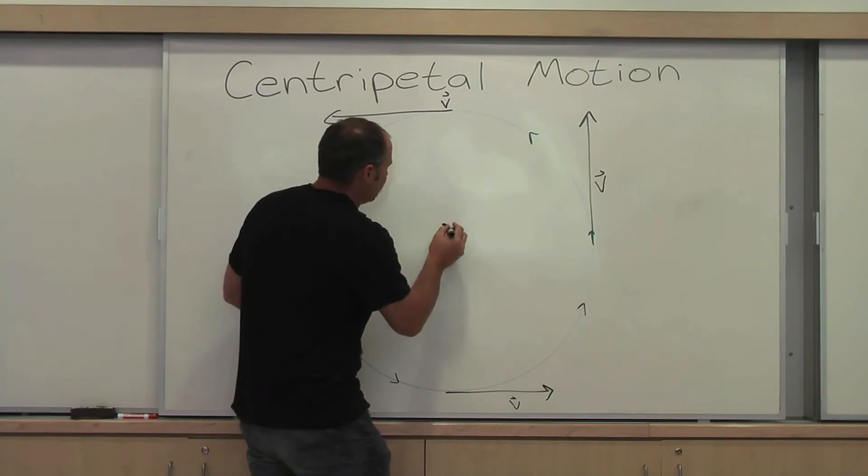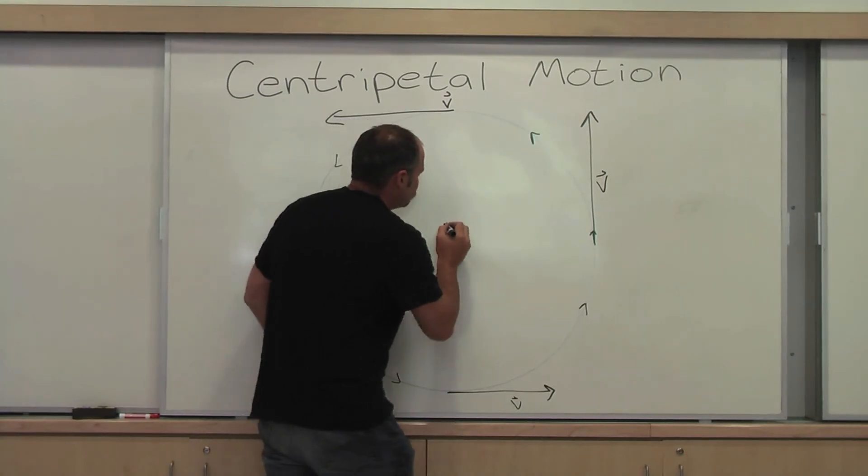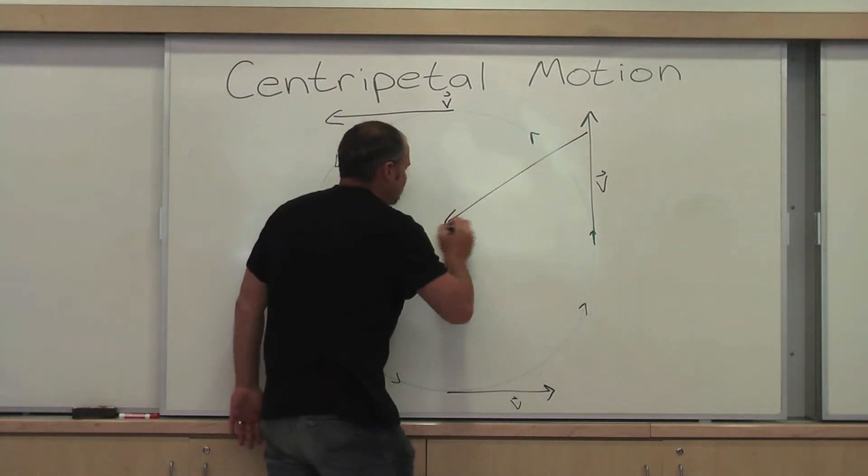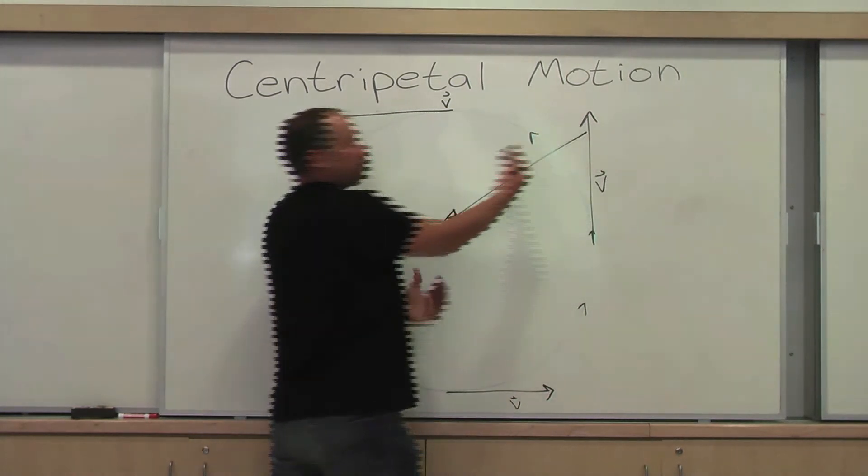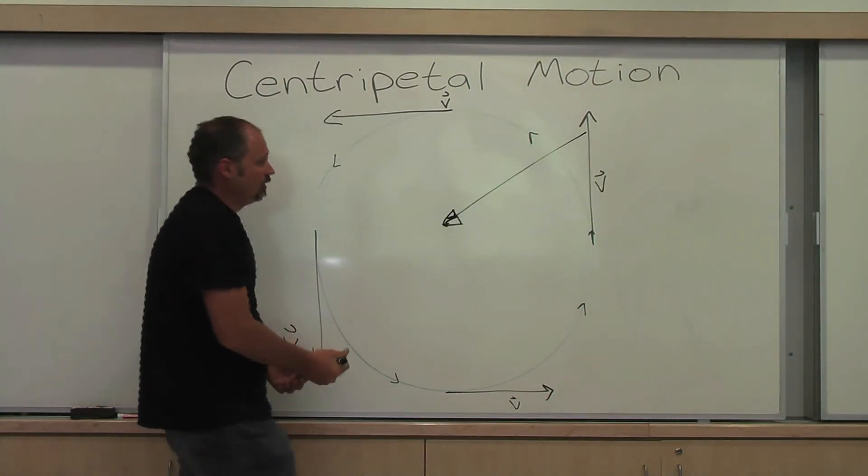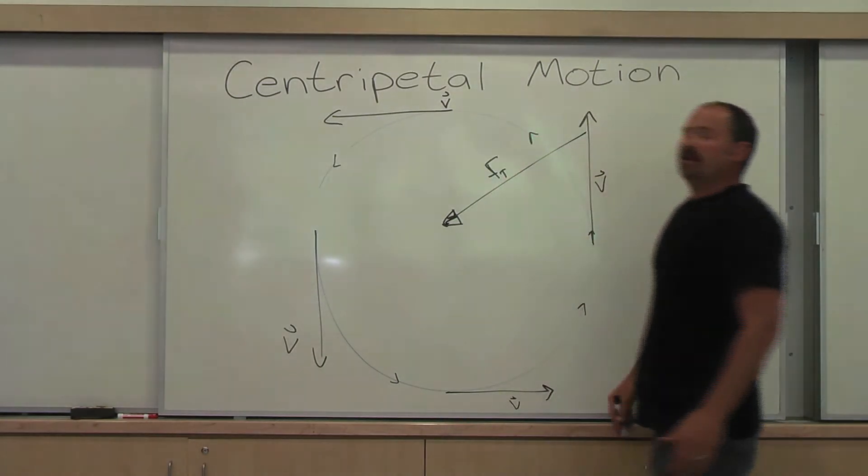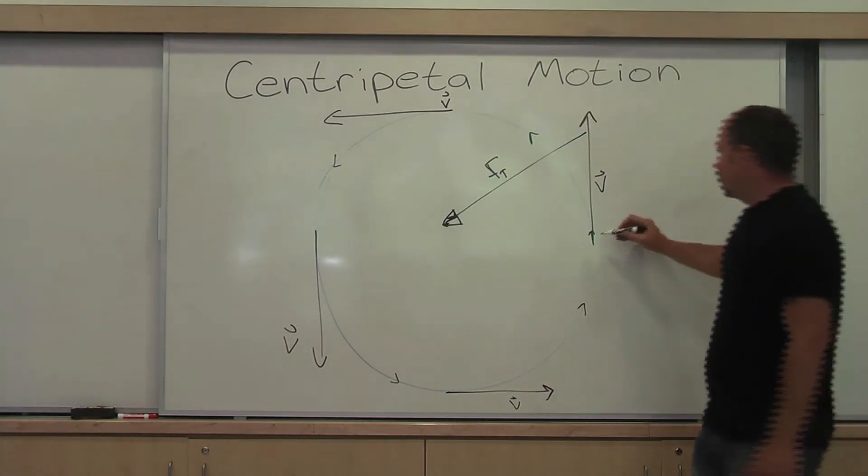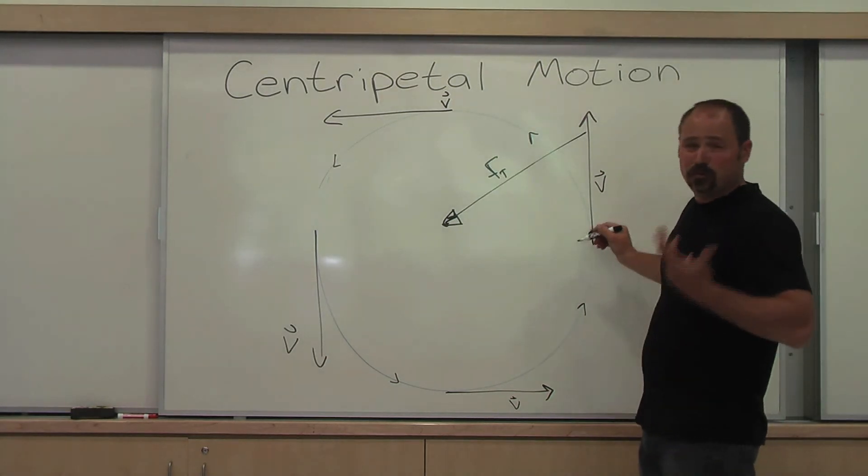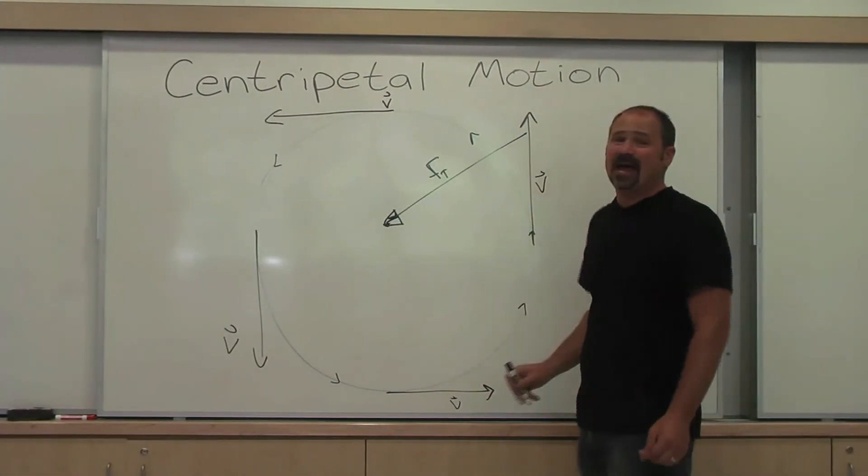And the string provides the inward force that brings it back into a circle. So if there was no force of tension here, it would just continue on its natural motion, straight line path.